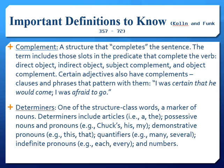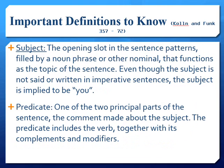Determiners modify nouns, and complements modify subjects and objects. In order for there to be a sentence in English, there must be a subject and a predicate. If one of these is missing, then there is no sentence, except in the case of an imperative sentence. Imperative sentences are commands.